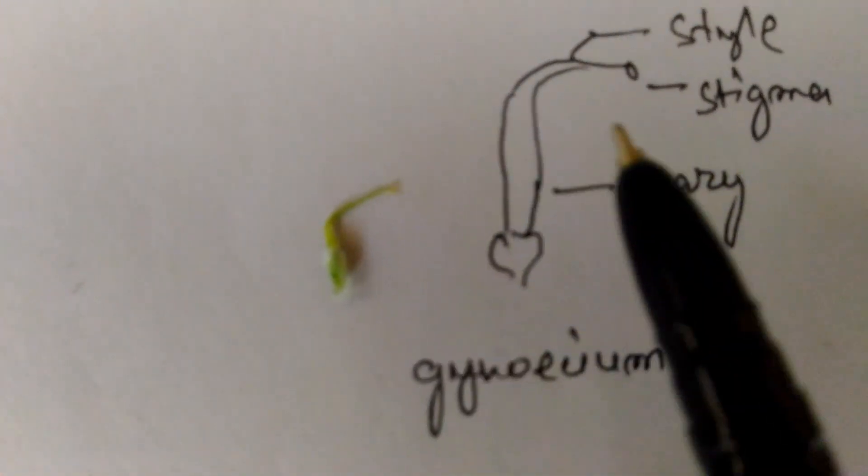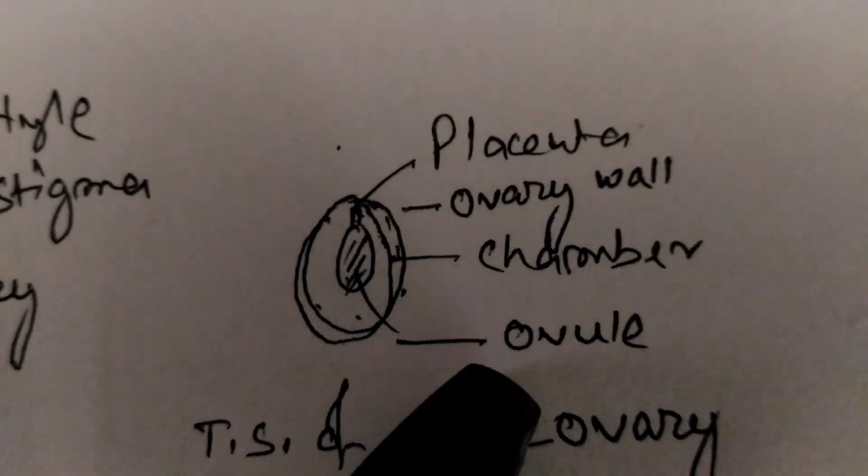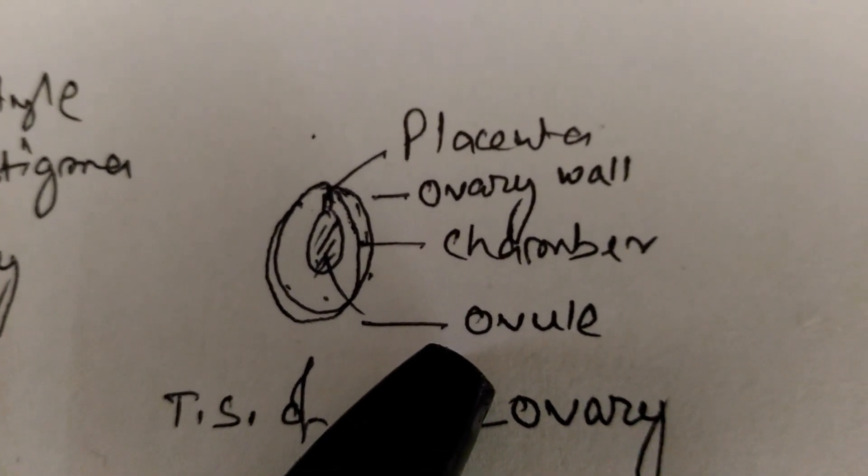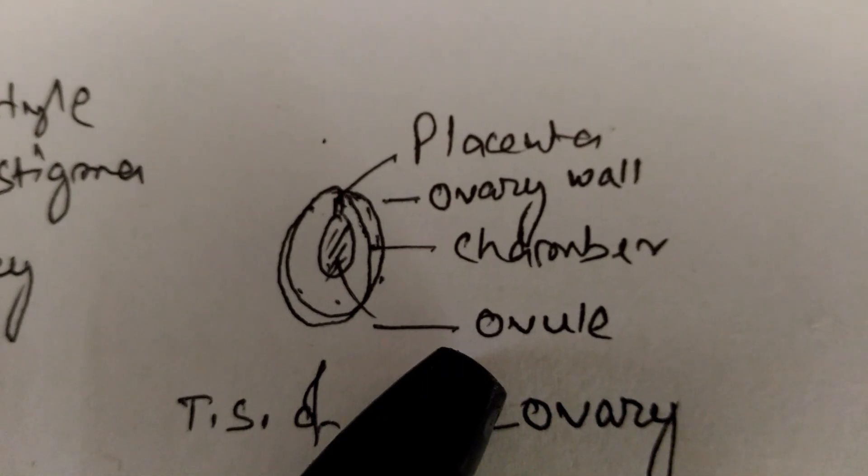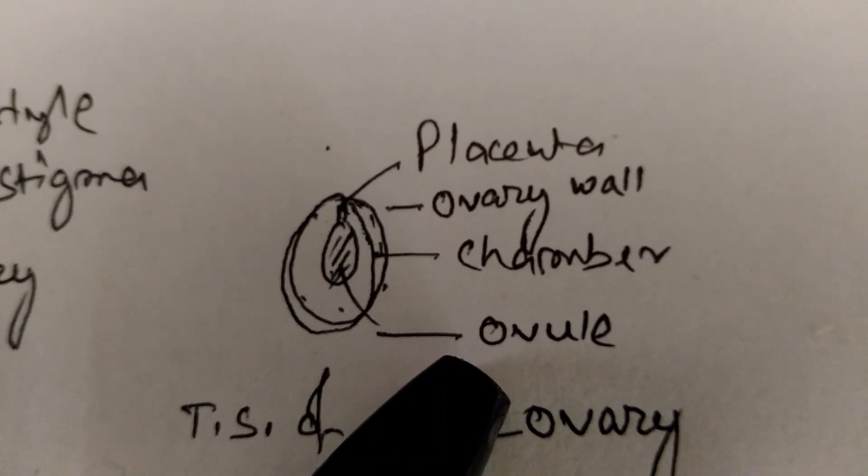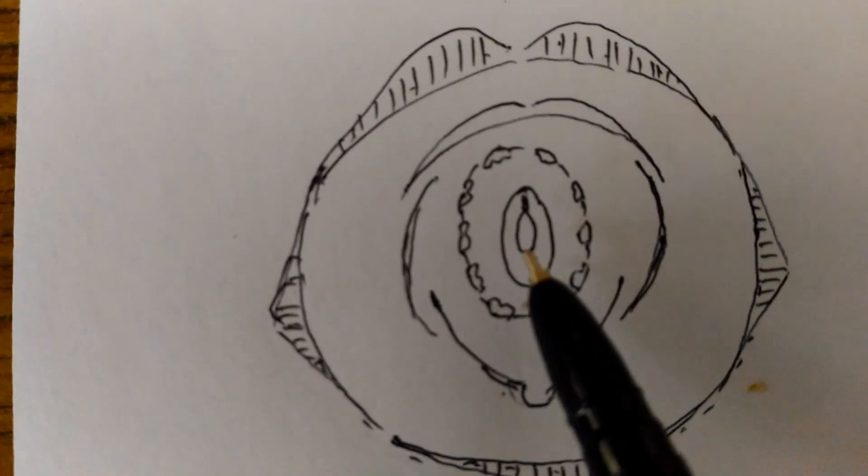This is the female portion, that is the gynoecium: ovary, style, and the stigma. This is the transverse section of the ovary showing the placentation. Here the placentation is marginal because the placenta is originated from the suture.